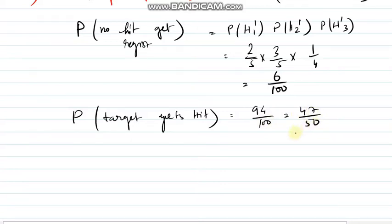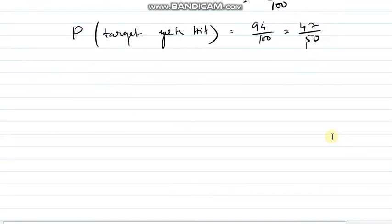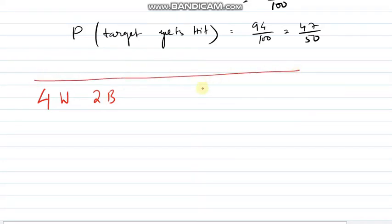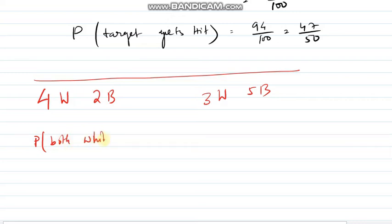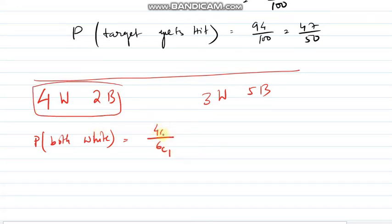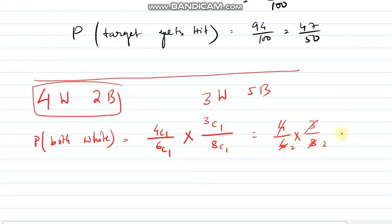So the probability that the target gets hit is 1 minus 6/100 = 94/100, which simplifies to 47/50. Next question: a bag contains 4 white and 2 black balls, and a second bag contains 3 white and 5 black balls. If one ball is drawn from each bag, find the probability that both are white. Drawing one ball from 6 balls: 4C1/6C1, and one white from the second bag: 3C1/8C1. These are independent events, so the answer is 4/6 × 3/8 = 1/4.